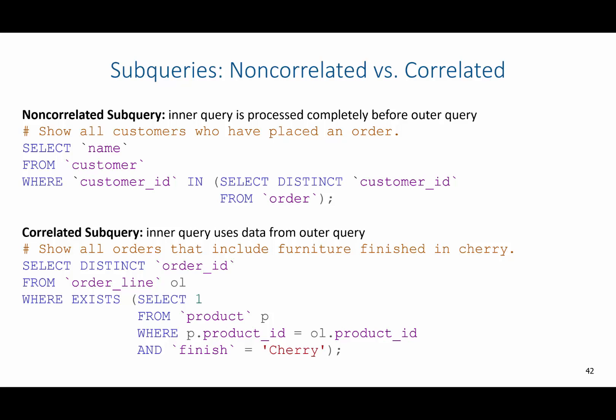In the subquery, I'm going to say select 1, which means that if a condition is met it will be true, meaning that 1 will return so that we can display those order IDs. I'm going to say select 1 from product with alias P, where P.product ID equals ol.product ID — ol comes from the outer query — and finish equals cherry.